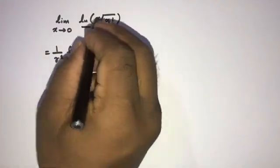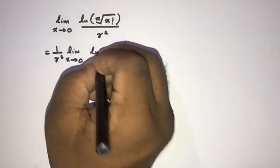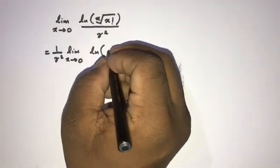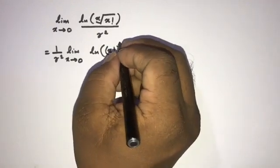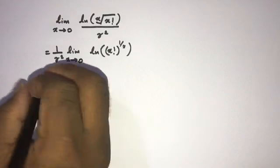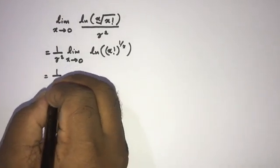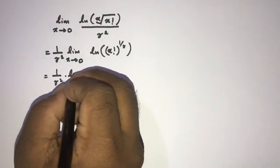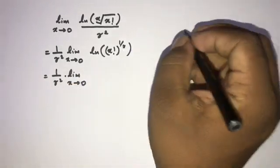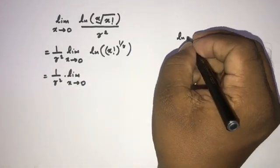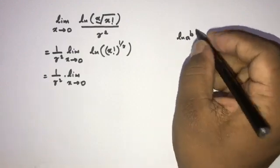And here we can write natural log of x factorial to the 1 over x. Then 1 over gamma squared, limit x approaches to 0. Here we know this property of natural log: natural log of a to the b is equal to b times natural log of a.